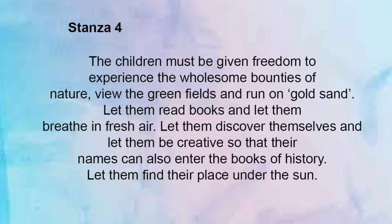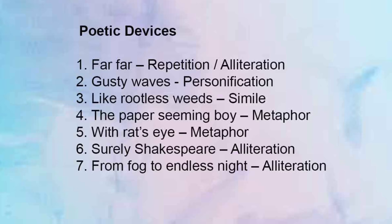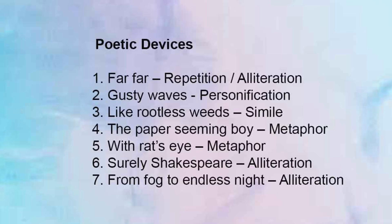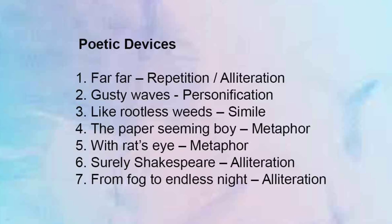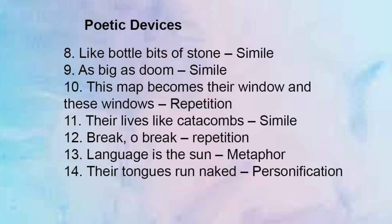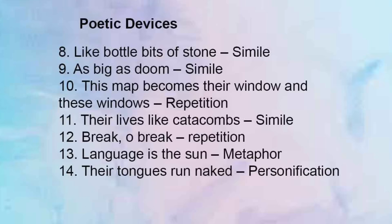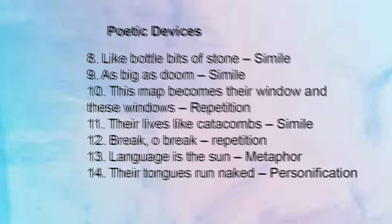Poetic devices used in the poem: 'Far far' — repetition or alliteration; 'Gusty waves' — personification; 'Like rootless weeds' — simile; 'The paper-seeming boy' — metaphor; 'With rat's eyes' — metaphor; 'Surely Shakespeare' — alliteration; 'From fog to endless night' — alliteration; 'Like bottle bits of stone' — simile; 'As big as doom' — simile; 'This map becomes their window and these windows' — repetition; 'Their lives like catacombs' — simile; 'Break or break' — repetition; 'Language is the sun' — metaphor; 'Their tongues run naked' — personification.